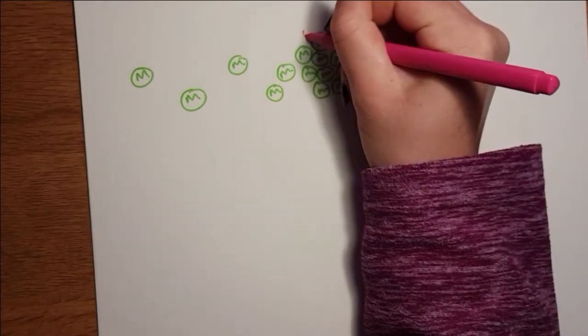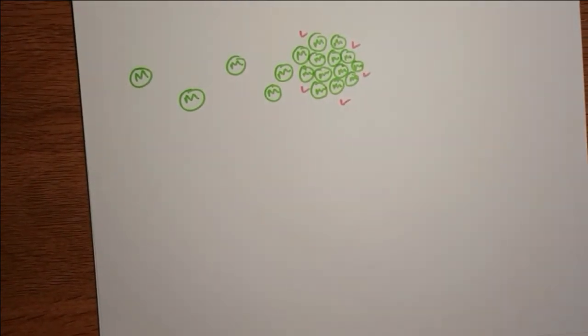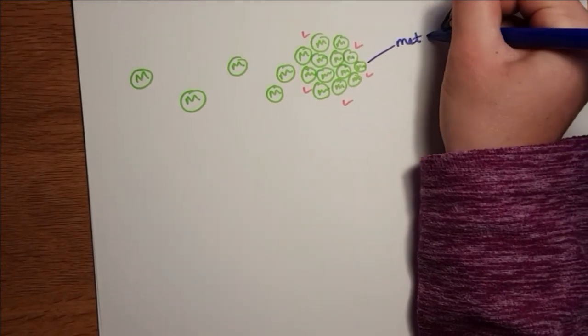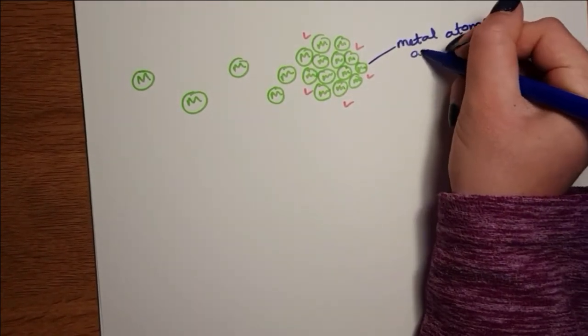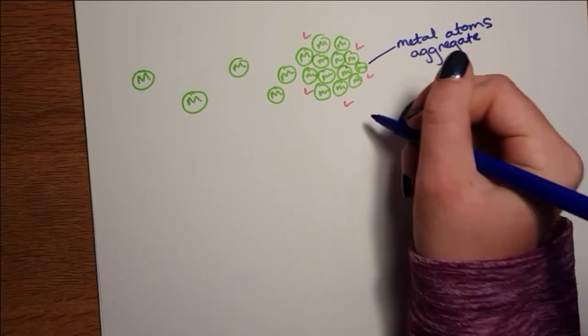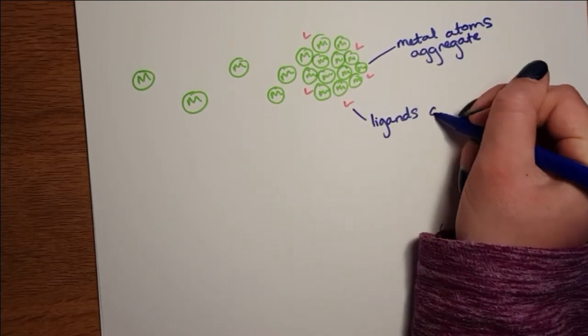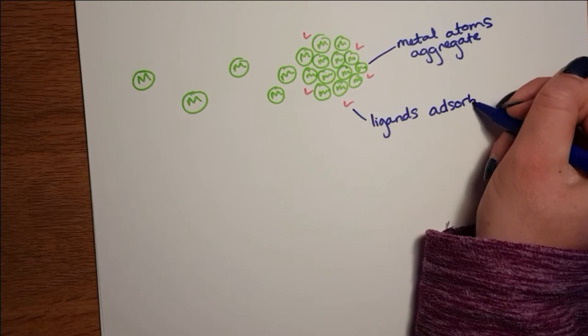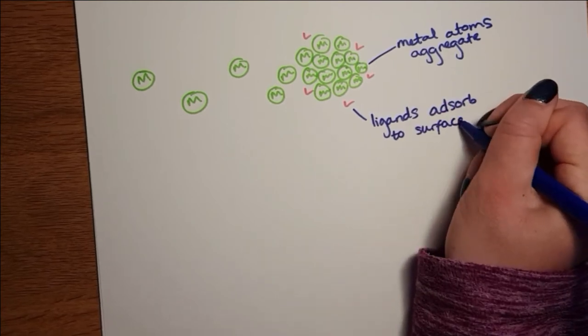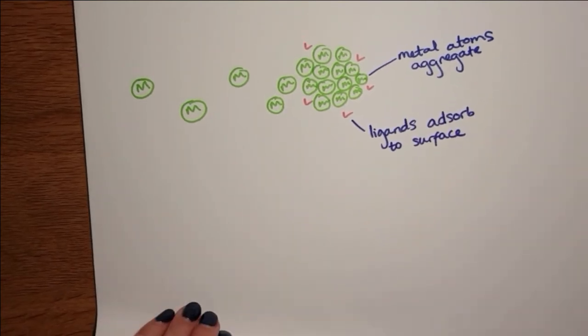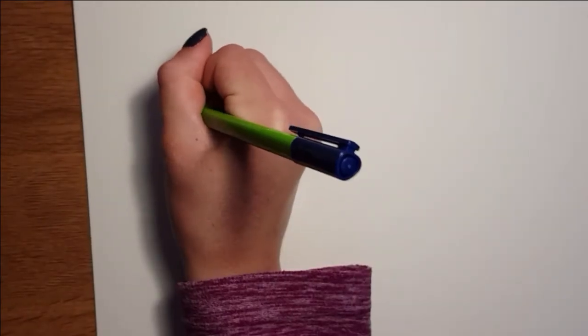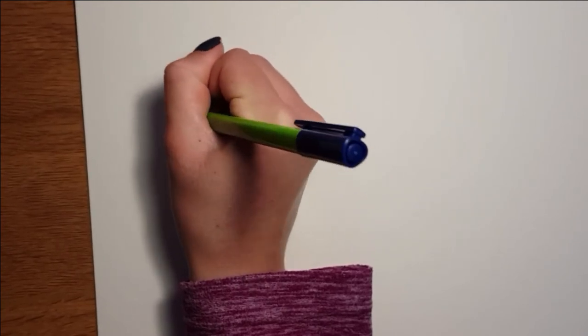The reason for this is that photochemical decomposition triggered by a laser occurs much faster than thermal decomposition, so many more metal atoms are released at once. This results in a dense metal core.